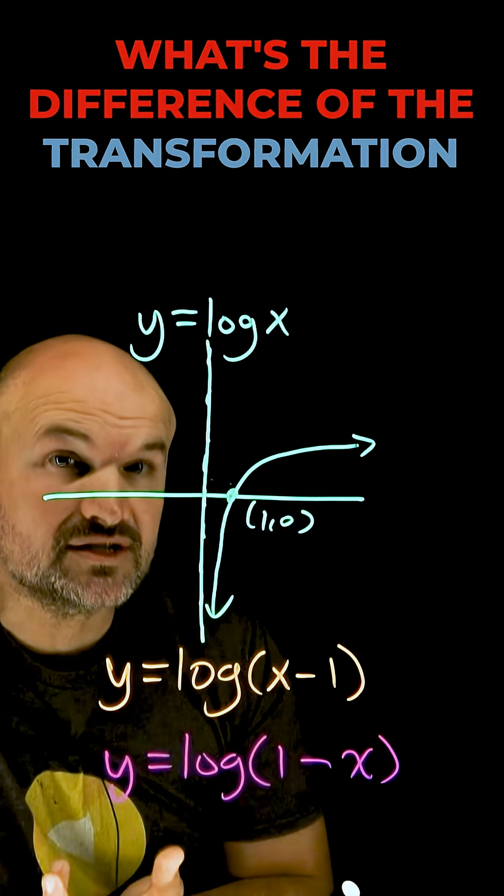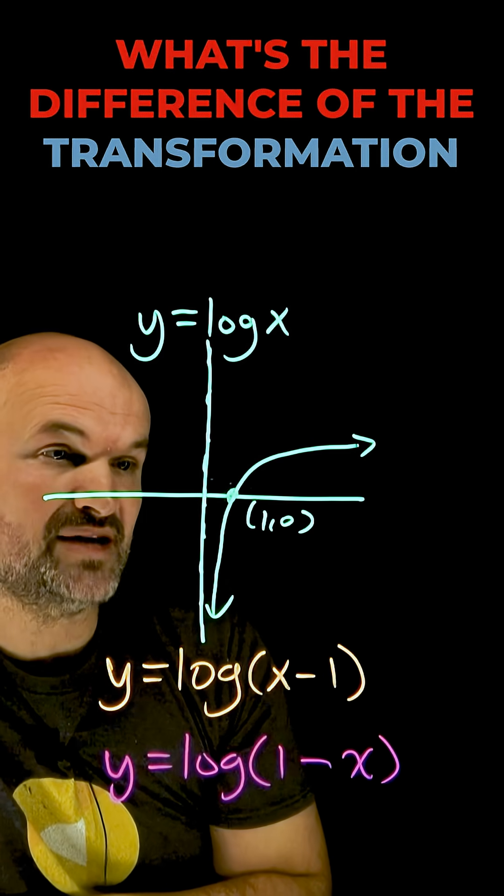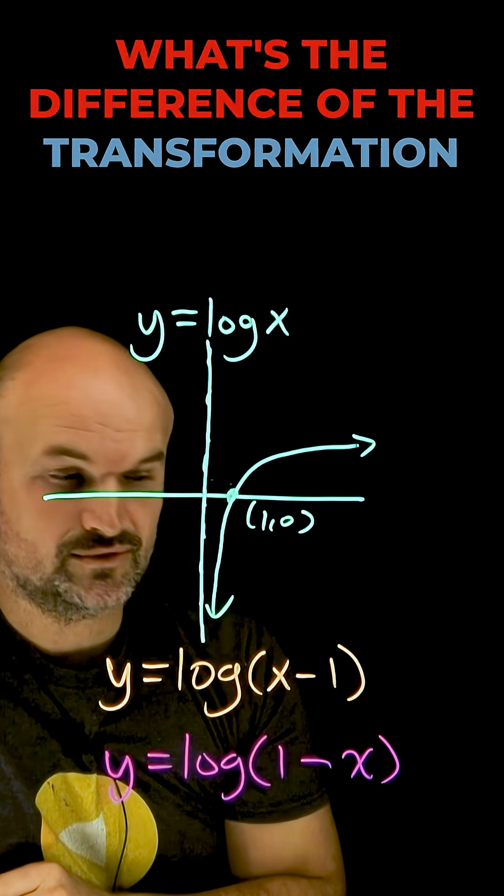The first thing is what the parent graph looks like for the logarithmic function. That's what I have here, y equals log of x. You can see there's an x intercept at 1 comma 0 and there's a vertical asymptote at x equals 0.